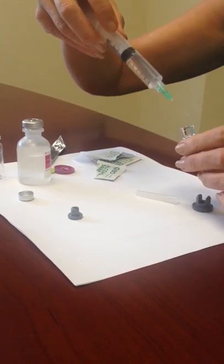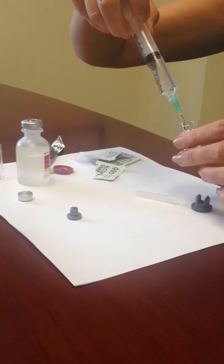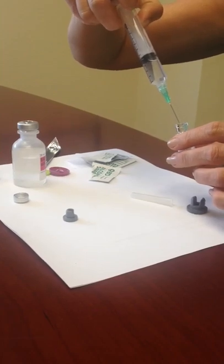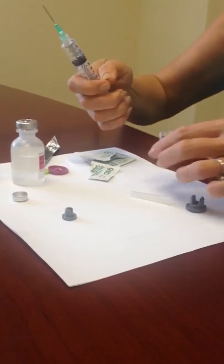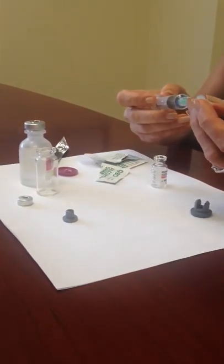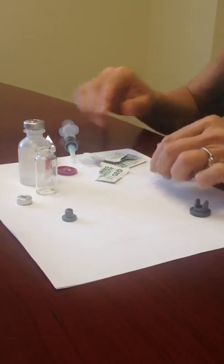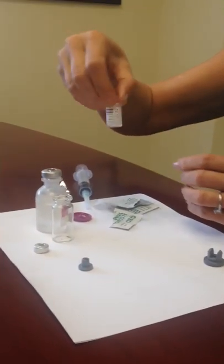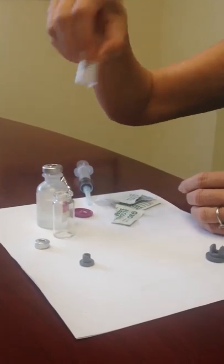Now just inject a little bit of water into your Omnitrope vial until it's all liquid. I like to do this probably twice. You just swirl it around to make sure it's all dissolved.